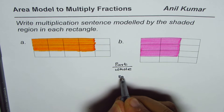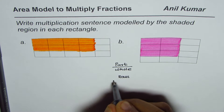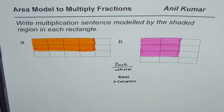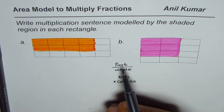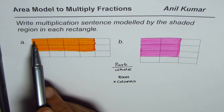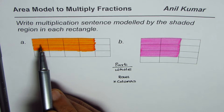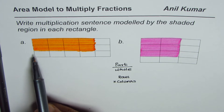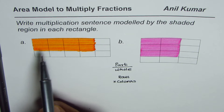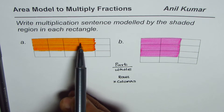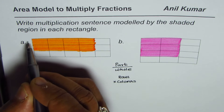Area is rows times columns. So two things to understand: fractions are part of the whole, and area is rows times columns. To write the shaded region as a multiplication sentence, we need to know how many rows are shaded out of the total number of rows, times how many columns are shaded out of the total number of columns.